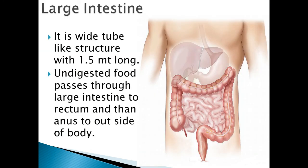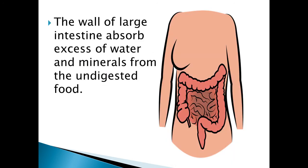This is the large intestine. It is a wide tube-like structure of about 1.5 meters long. Undigested food passes through the large intestine and rectum and then anus to the outside of our body. The wall of the large intestine absorbs excess amounts of water and minerals from the undigested food.